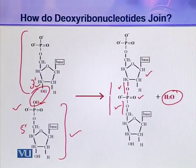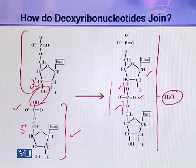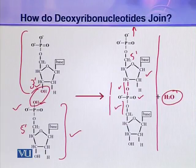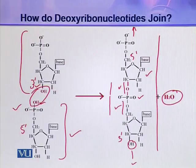All successive nucleotides are linked through this phosphodiester linkage. This whole molecule is a dinucleotide. In this dinucleotide, you can see the phosphate attached at the 5 prime end is free to form an ester linkage with another nucleotide. Similarly, the hydroxyl present at the 3 prime end is also available to make an ester linkage with another nucleotide. In this way, the chain grows and makes a polynucleotide chain.